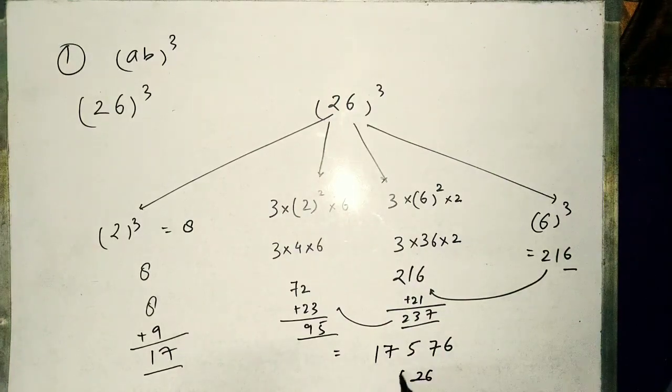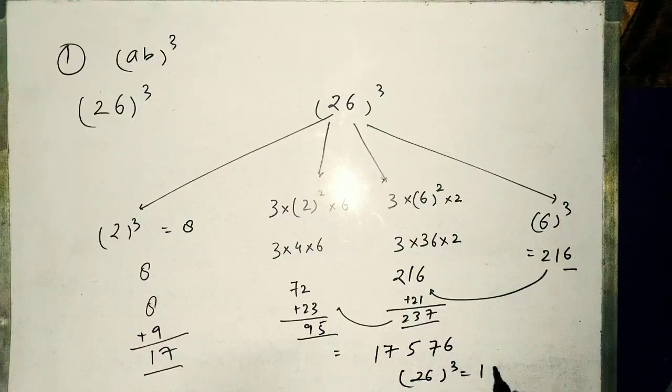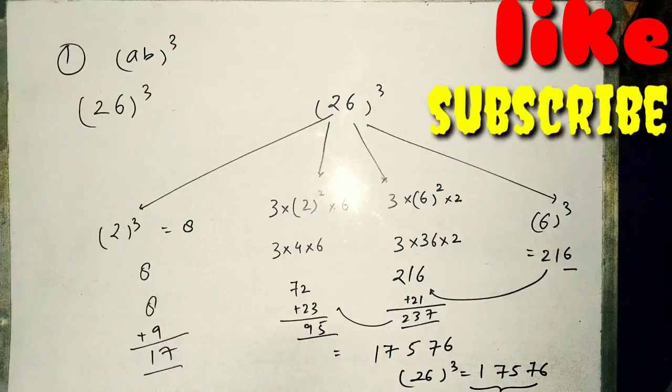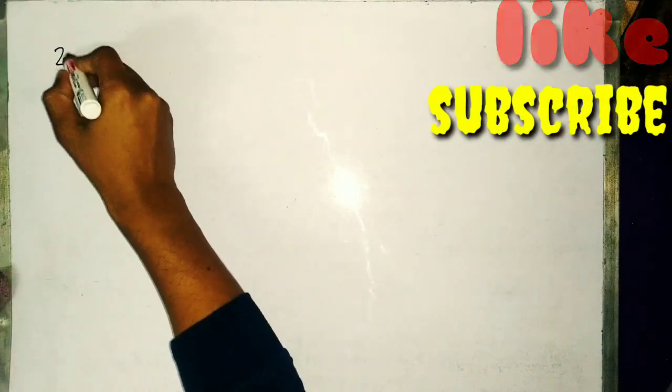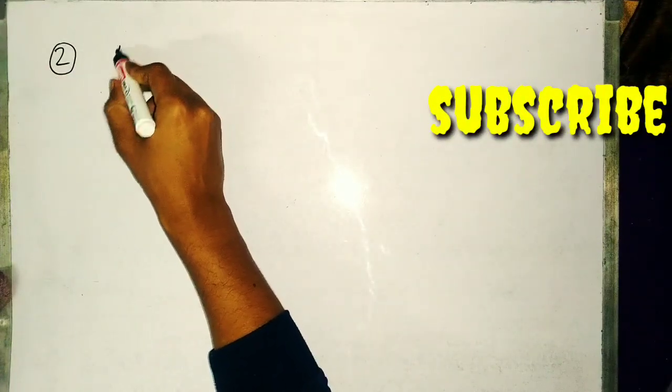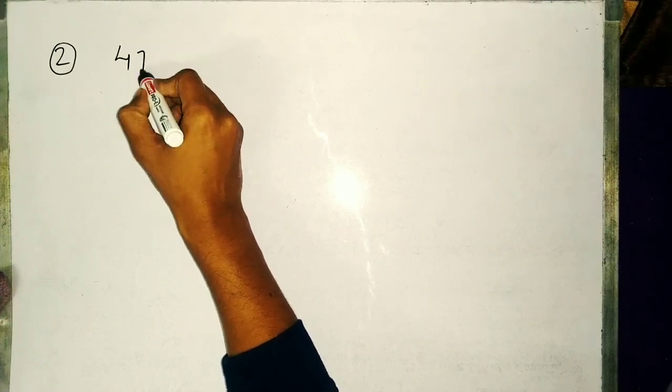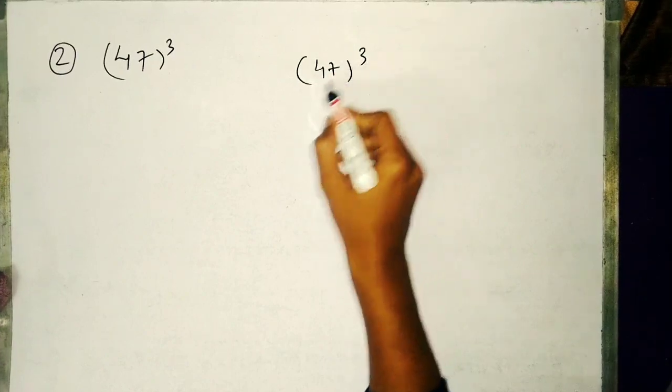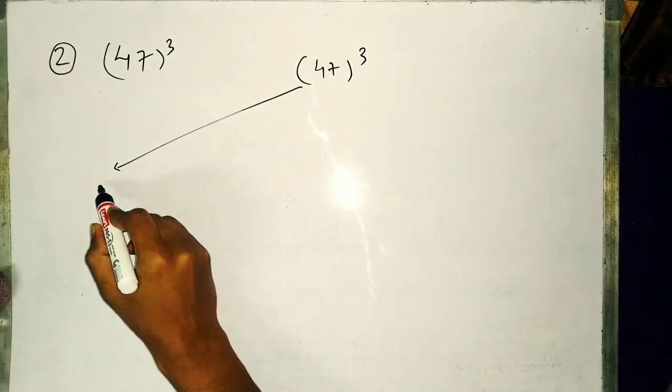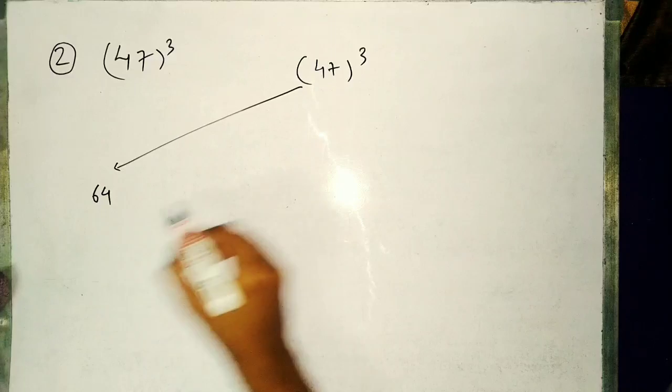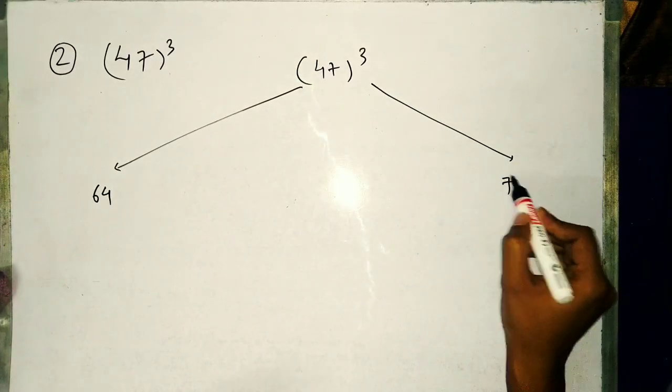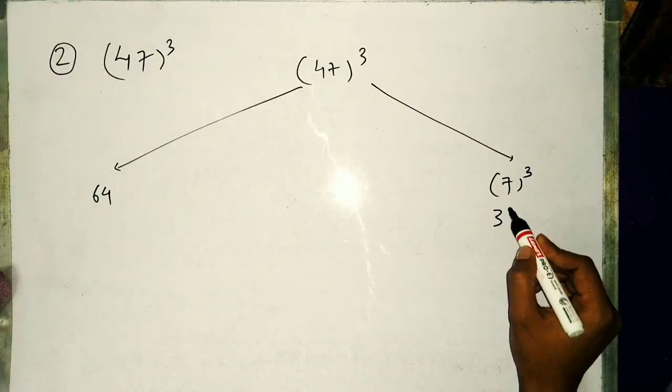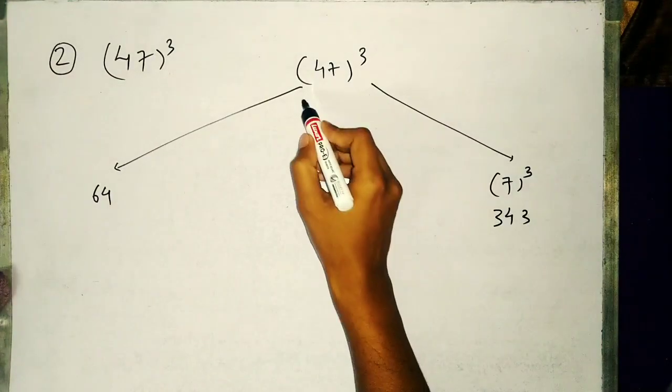Cube of 26 will be 17576. You can cross check with the calculator. Similarly, we can see another example: suppose 47 cube.